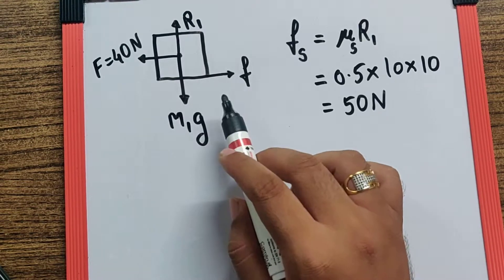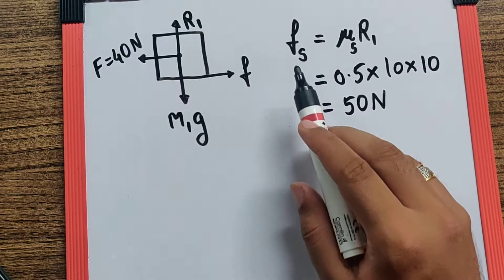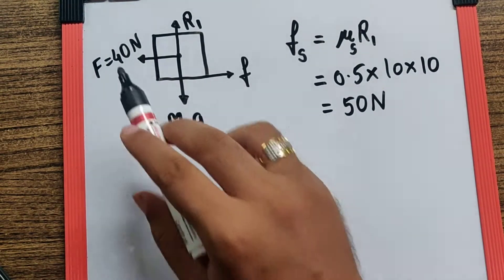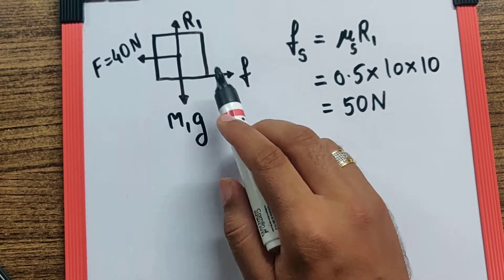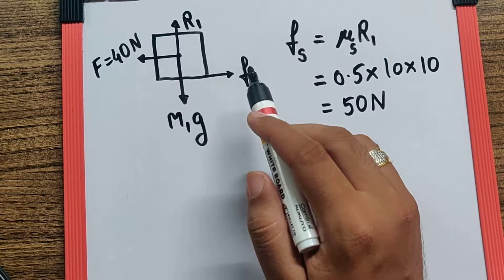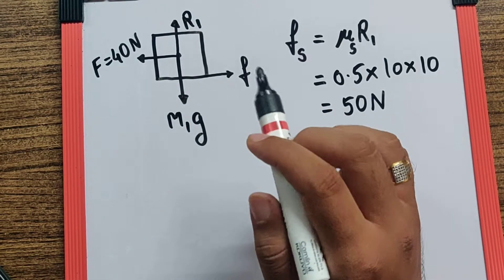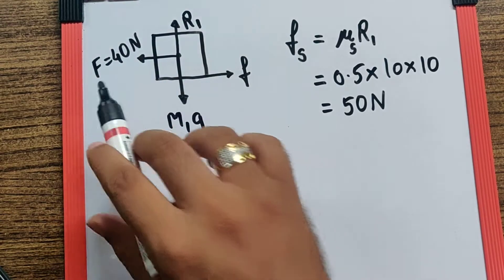So here I can say the friction acting between the block and the slab is static friction. In case this value would have been less than 40, then we could say that the friction acting between block and slab would be kinetic or dynamic, because the body would not be at rest since the friction cannot balance the force.